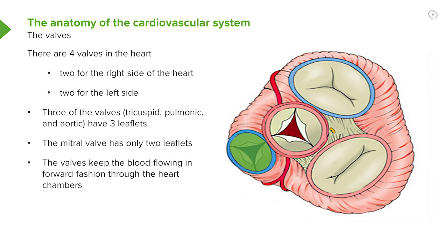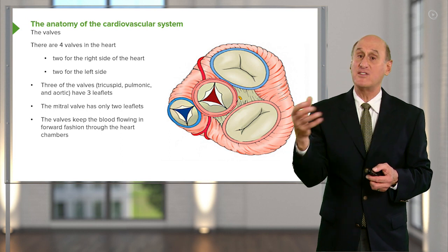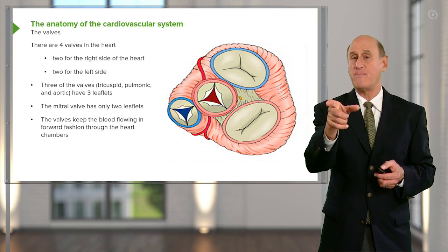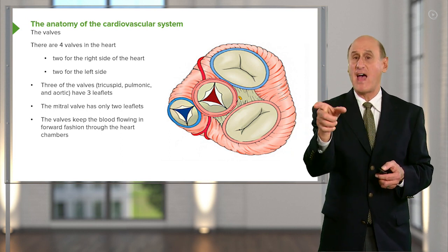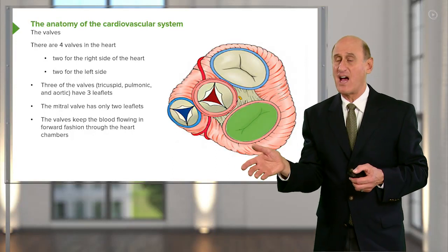Look at the blue valve to the left. That's the pulmonary artery valve, and you'll notice it's open because the right ventricle is squeezing blood through it. That blood goes to the lungs, gets oxygenated, picks up oxygen, comes back through the pulmonary veins to the left atrium, and then passes through the valve — the red circled valve on the right-hand side of the diagram.